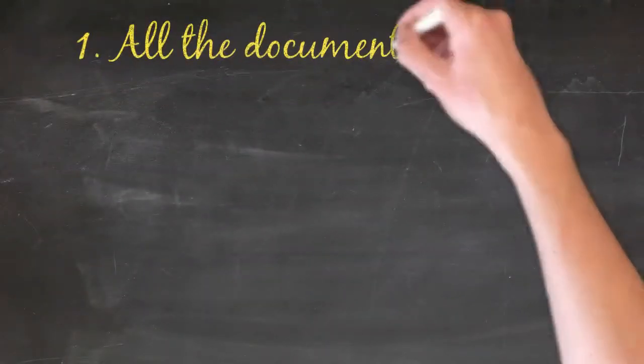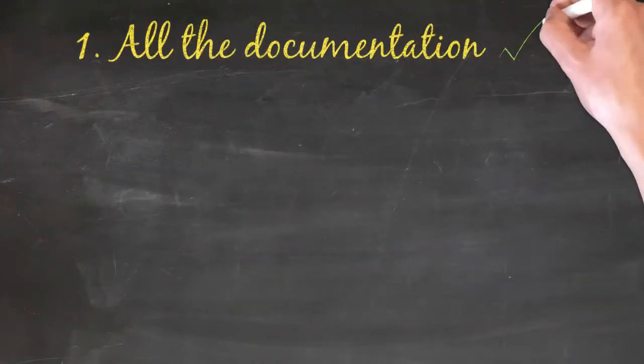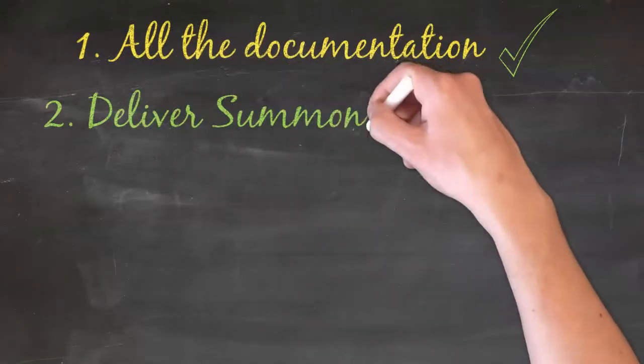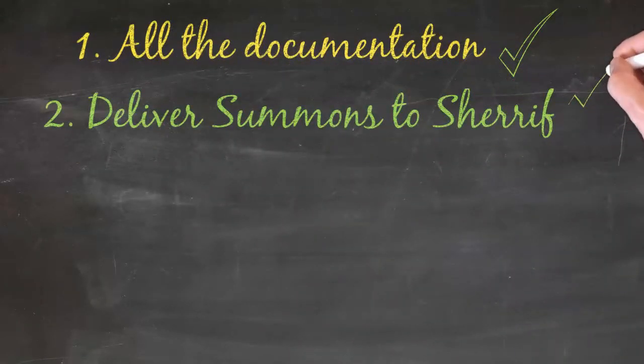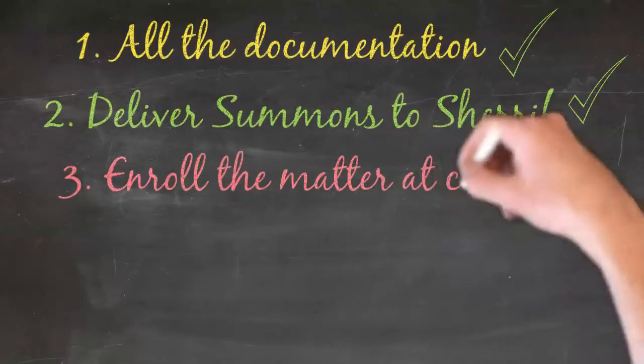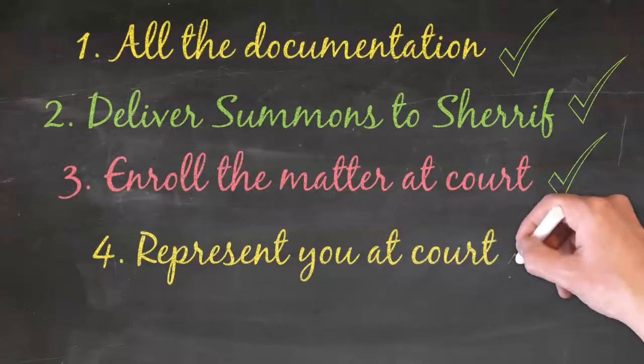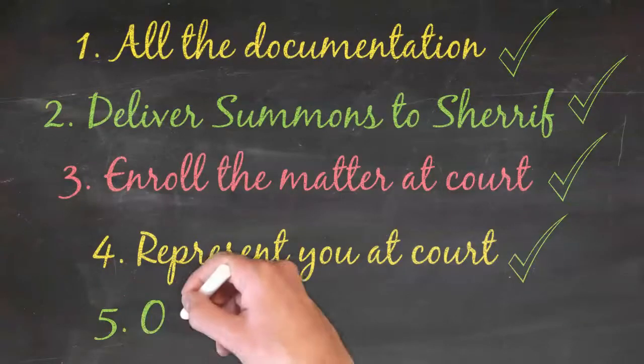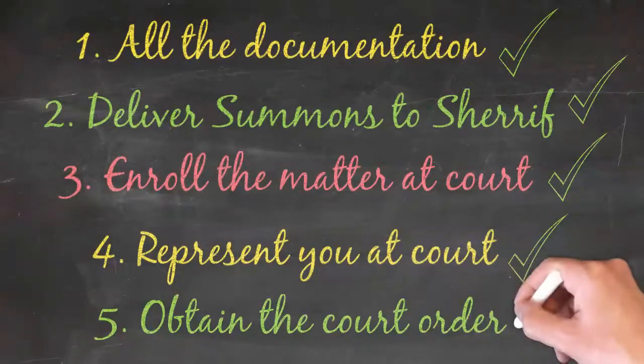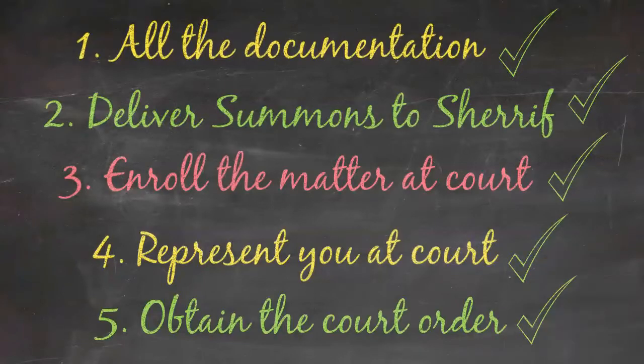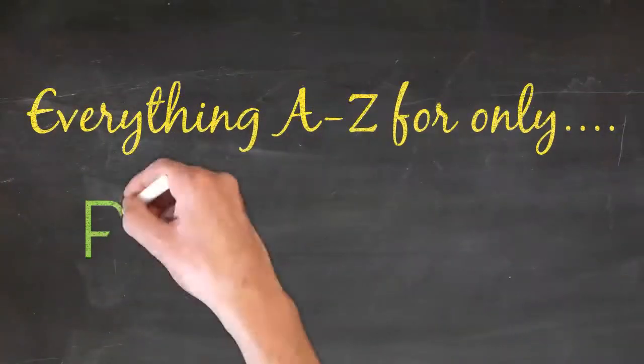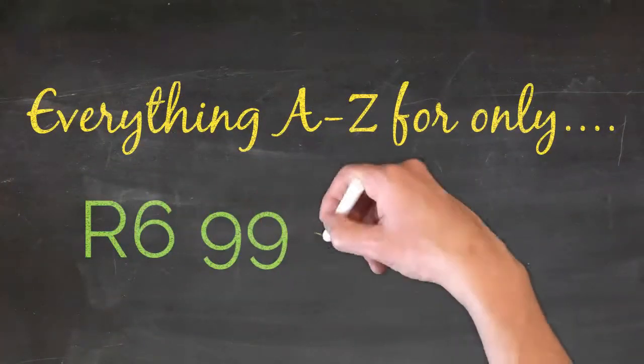So we will draft all the required information, including the summons and the settlement agreement. We will deliver the summons to the nearest sheriff's office. We will enroll the matter at court. One of our attorneys will represent you when the matter is heard by the court. We will get the final court order, which you can collect from our office or we can deliver straight to your door via courier. All of that for just 6,995 Rand plus VAT.